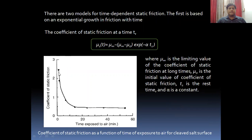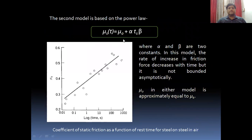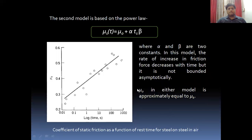The graph shows that the coefficient of static friction decreases with time when exposed to air for a particular pair of mating surfaces. The second model is based on a power law, which shows that the coefficient of static friction increases logarithmically with time. This graph plots static coefficient of friction against logarithmic time and shows the increment of μs with time. Alpha and beta are the two constants in this power law. This graph is for steel on steel in air.